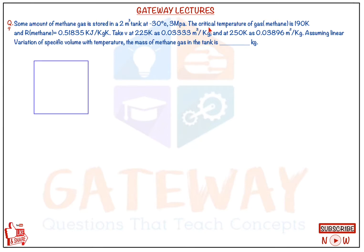The pressure is 3 megapascals. The critical temperature of methane is 190 kelvin and the characteristic gas constant R for methane is given as 0.51835 kilojoule per kg·kelvin. The specific volume at 225 kelvin is 0.0333 m³/kg and at 250 kelvin is 0.03896 m³/kg. Assuming linear variation of specific volume with temperature, the mass of methane gas in the tank is to be found in kg.